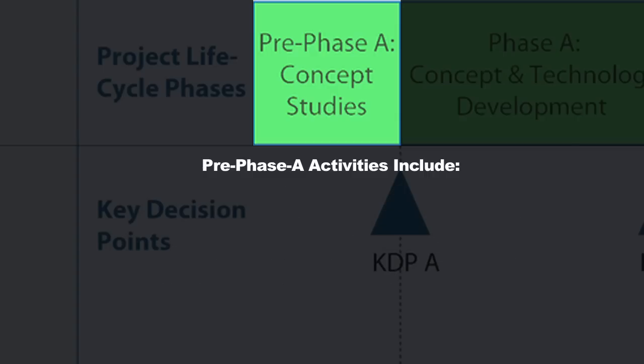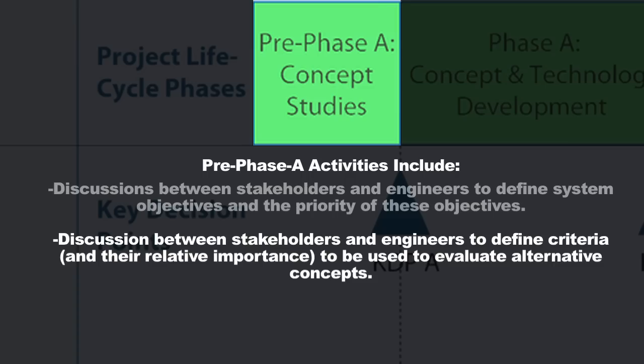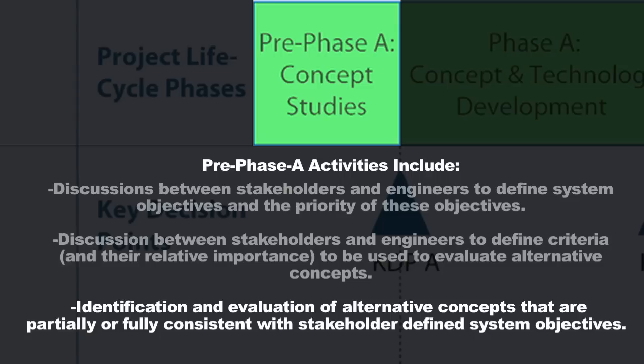Specific activities that happen in Pre-Phase A include: a discussion between stakeholders and engineers to define the system objectives and the priority of those objectives; a discussion to define the evaluation criteria and their relative importance that will be used to evaluate alternate concepts and decide which is optimal to go forward with; and an identification and evaluation of all alternate concepts, with analysis of which ones fully or partially meet stakeholder objectives and giving stakeholders feedback on those concepts.